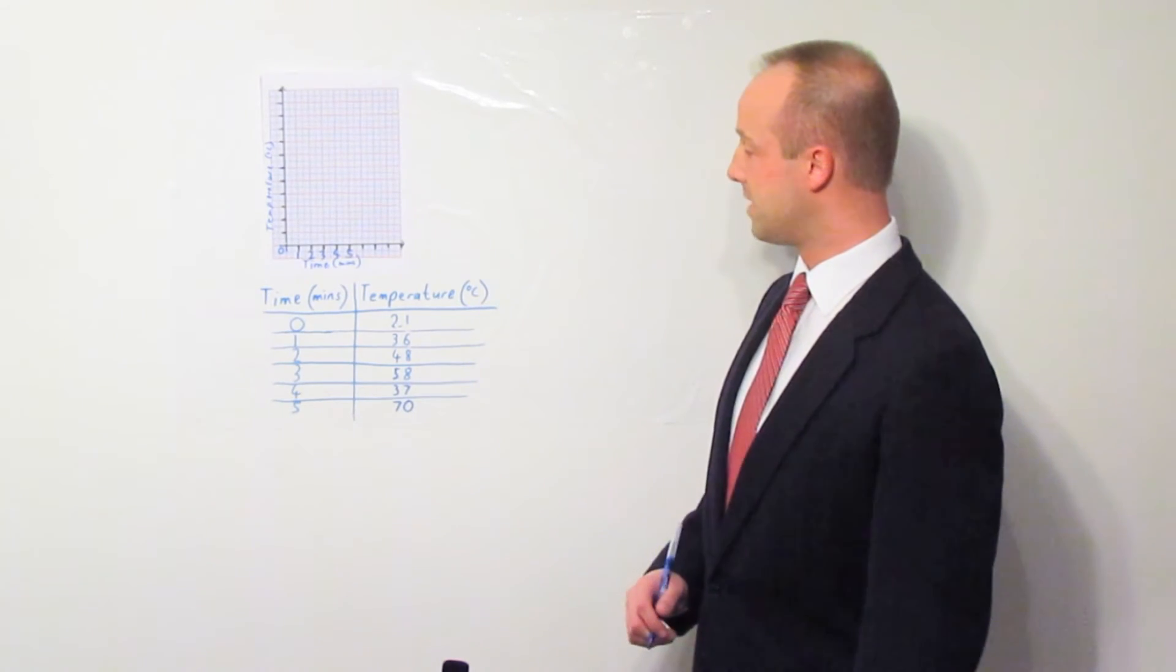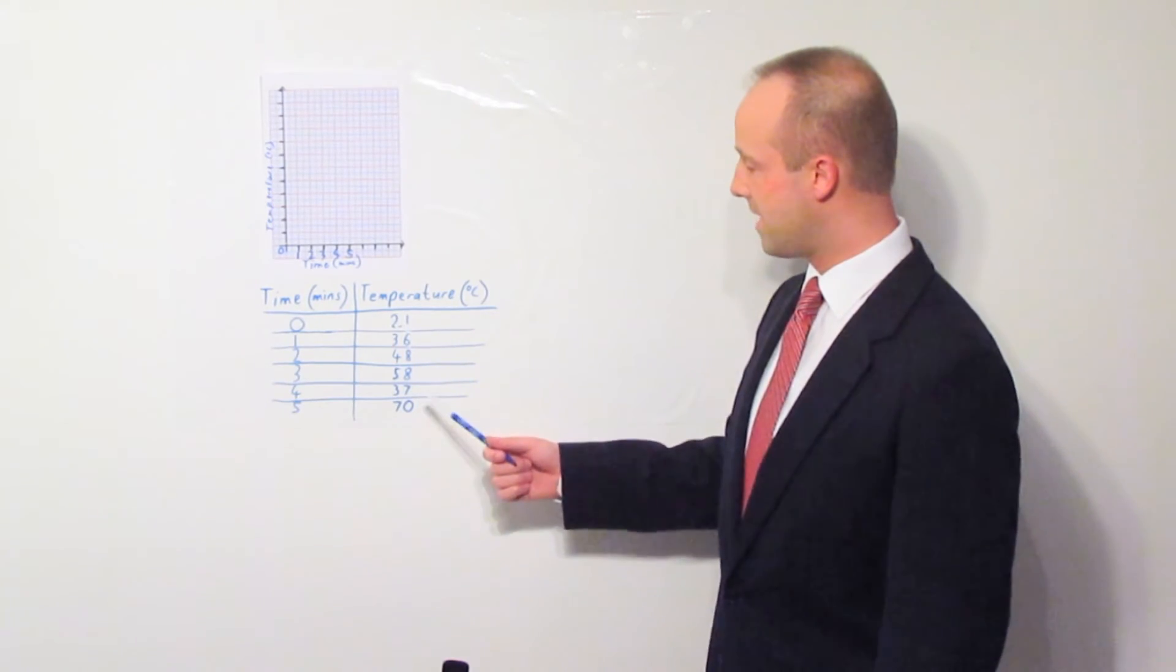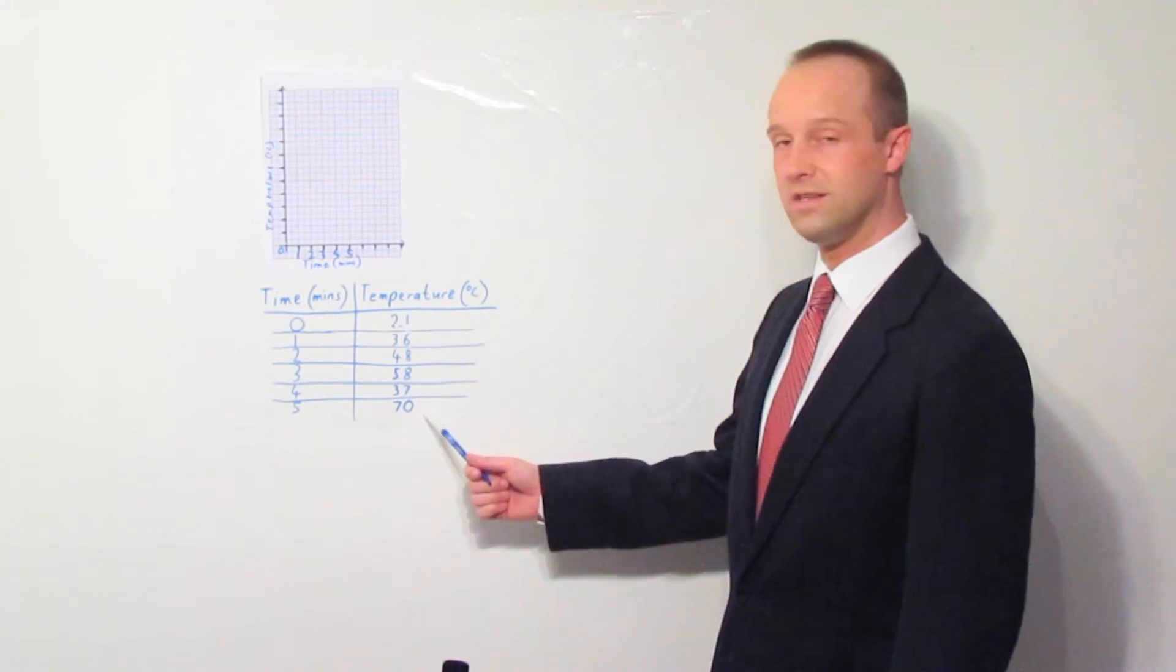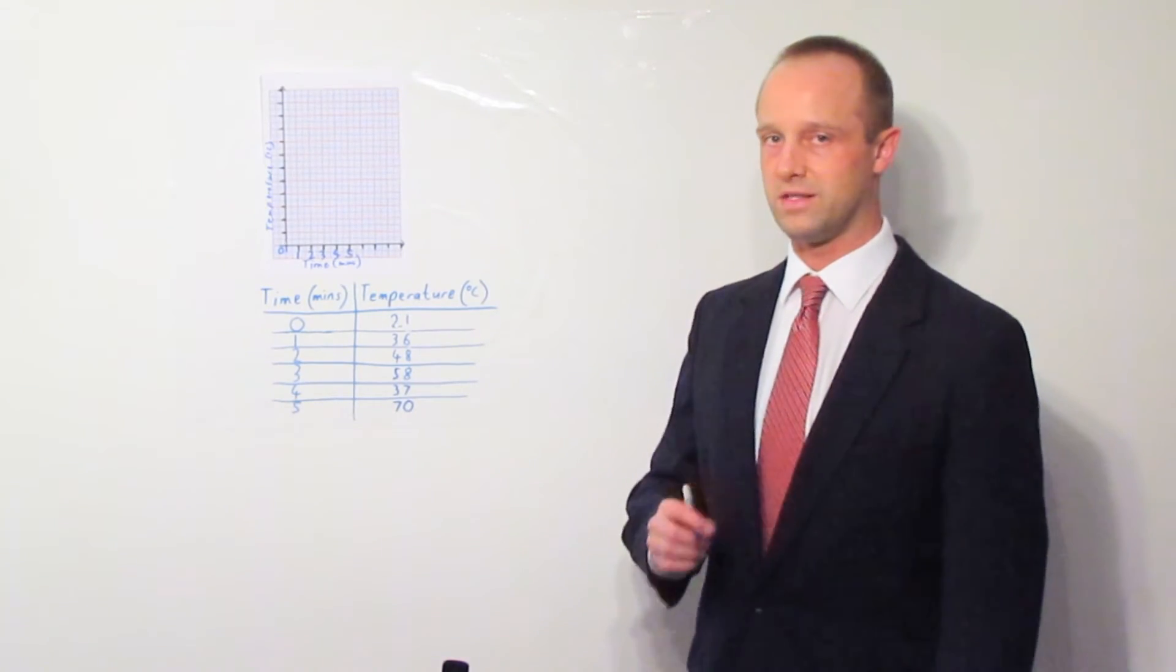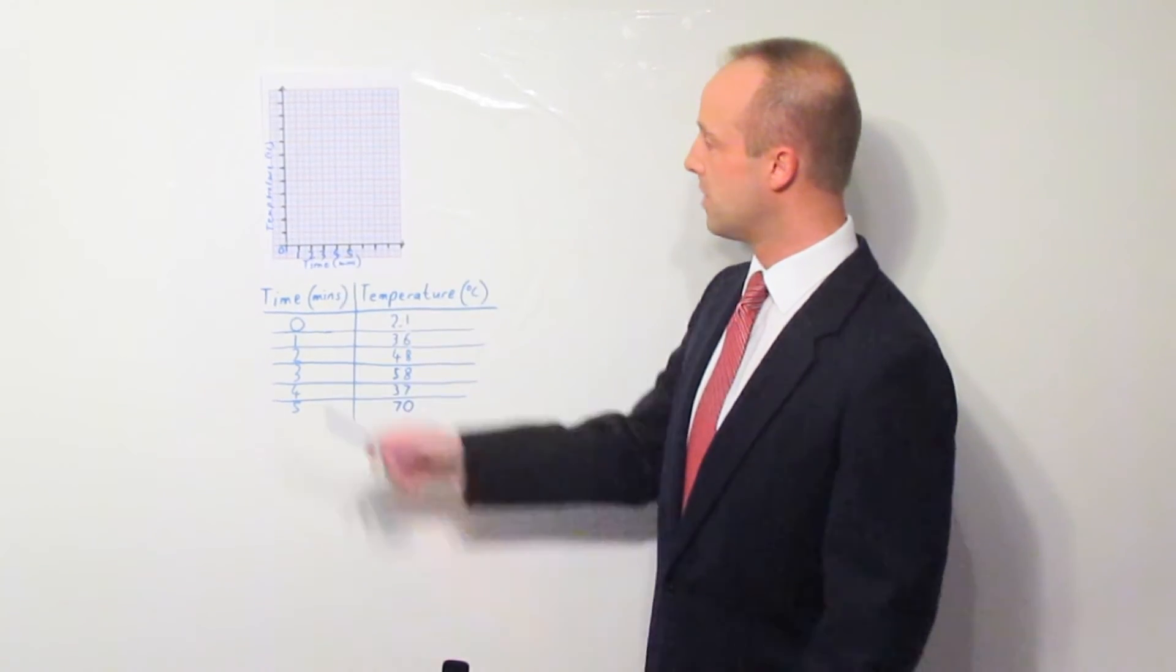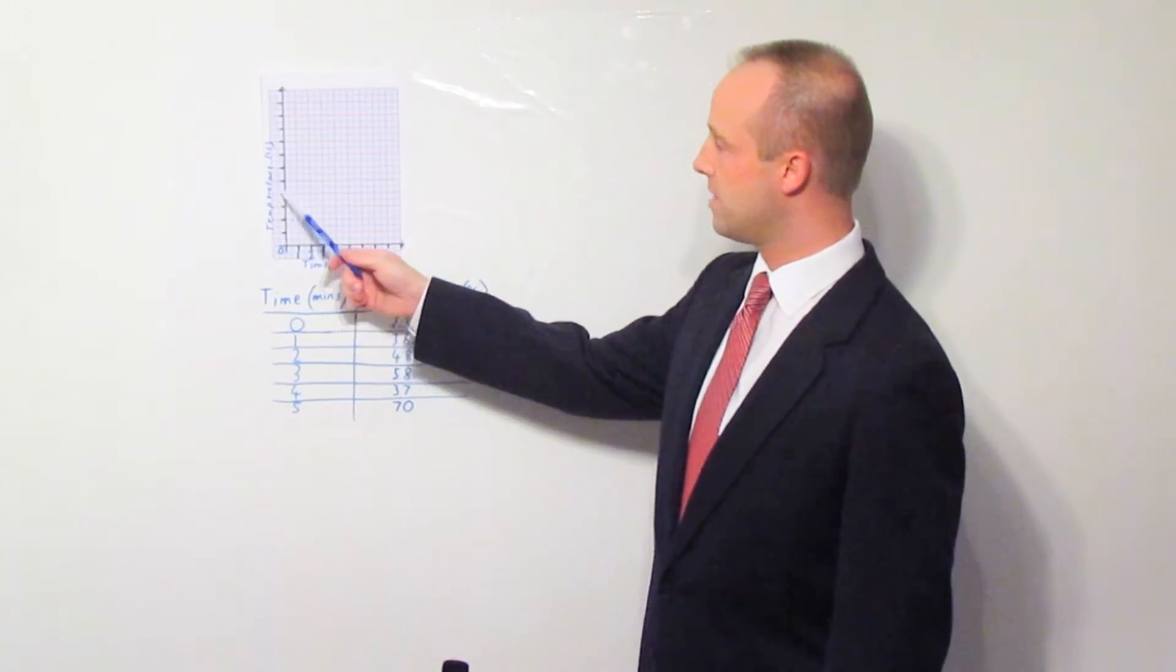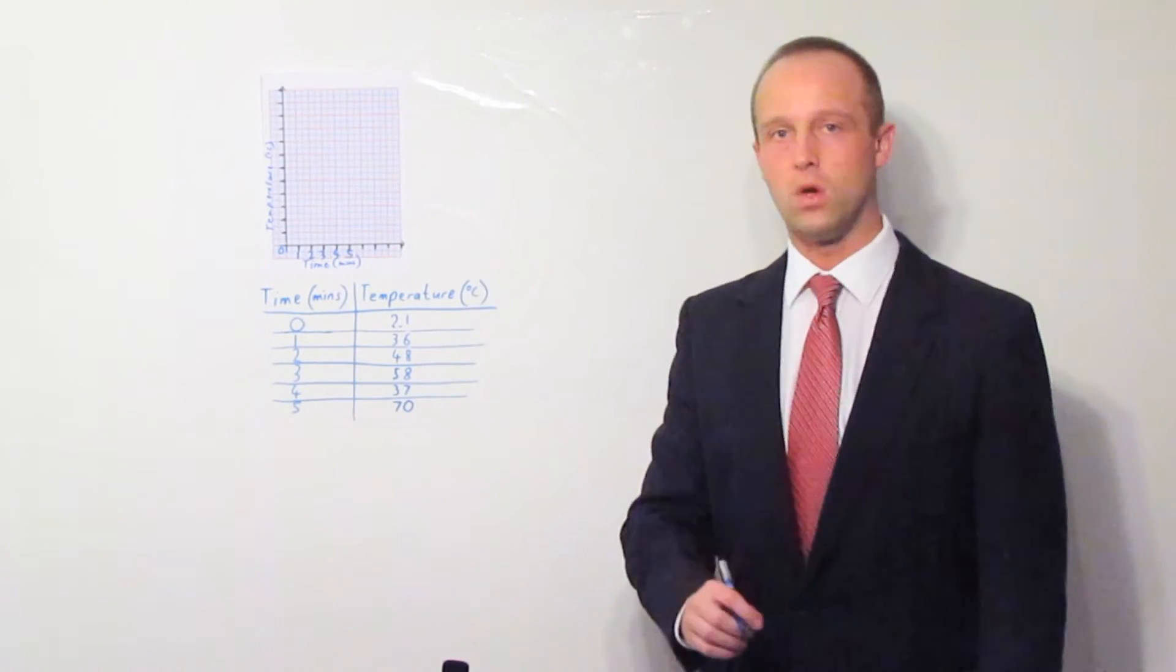So, let's have a look at temperature. It's a little bit trickier here. So, we've got 21, 36, 48, 58, 37, and 70. The largest number here is 70. So, that's the only one we're interested in. All we've got to do is figure out how to count up to 70 on this vertical scale. We could go up in ones, but obviously, that isn't going to fit.